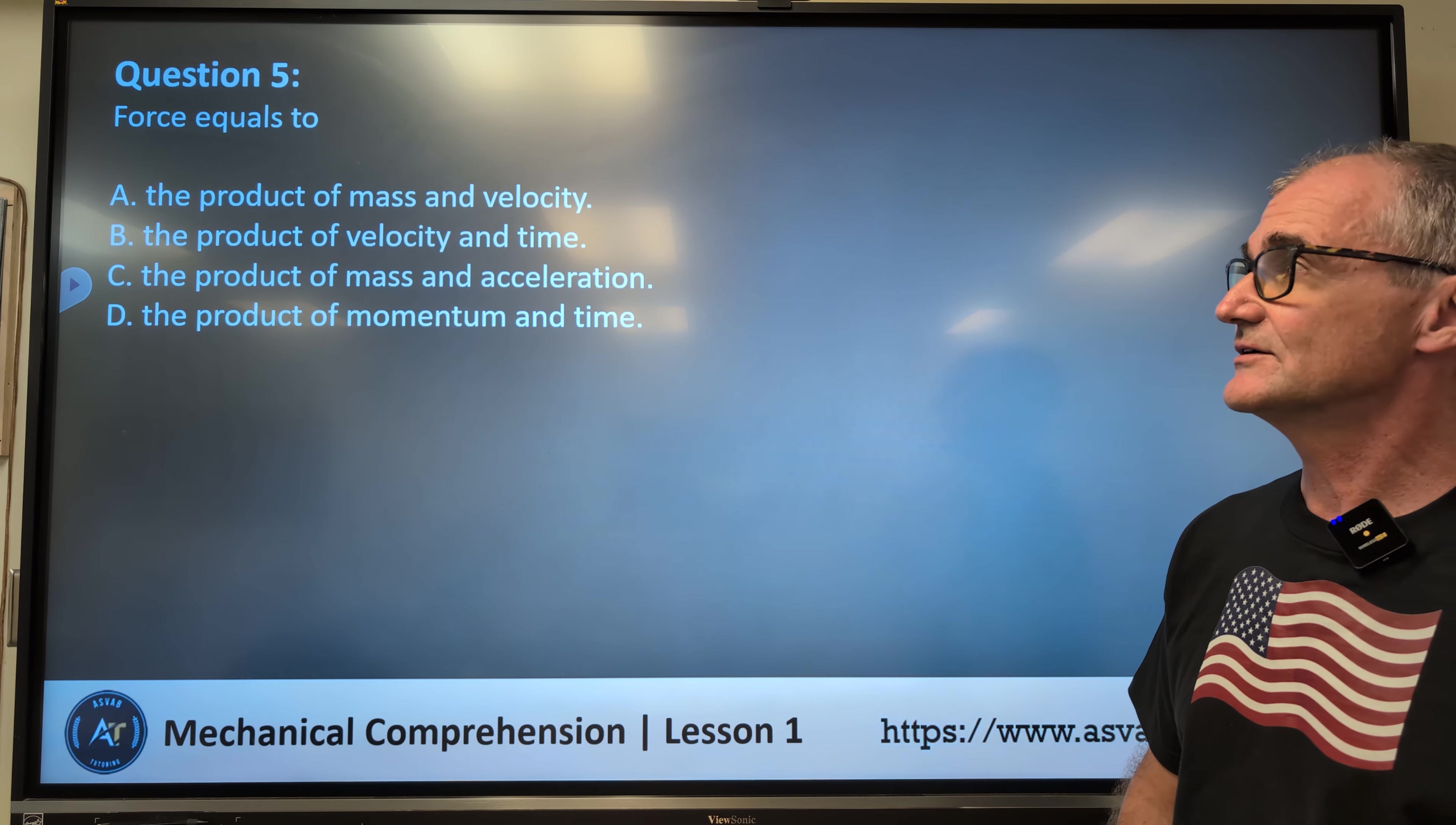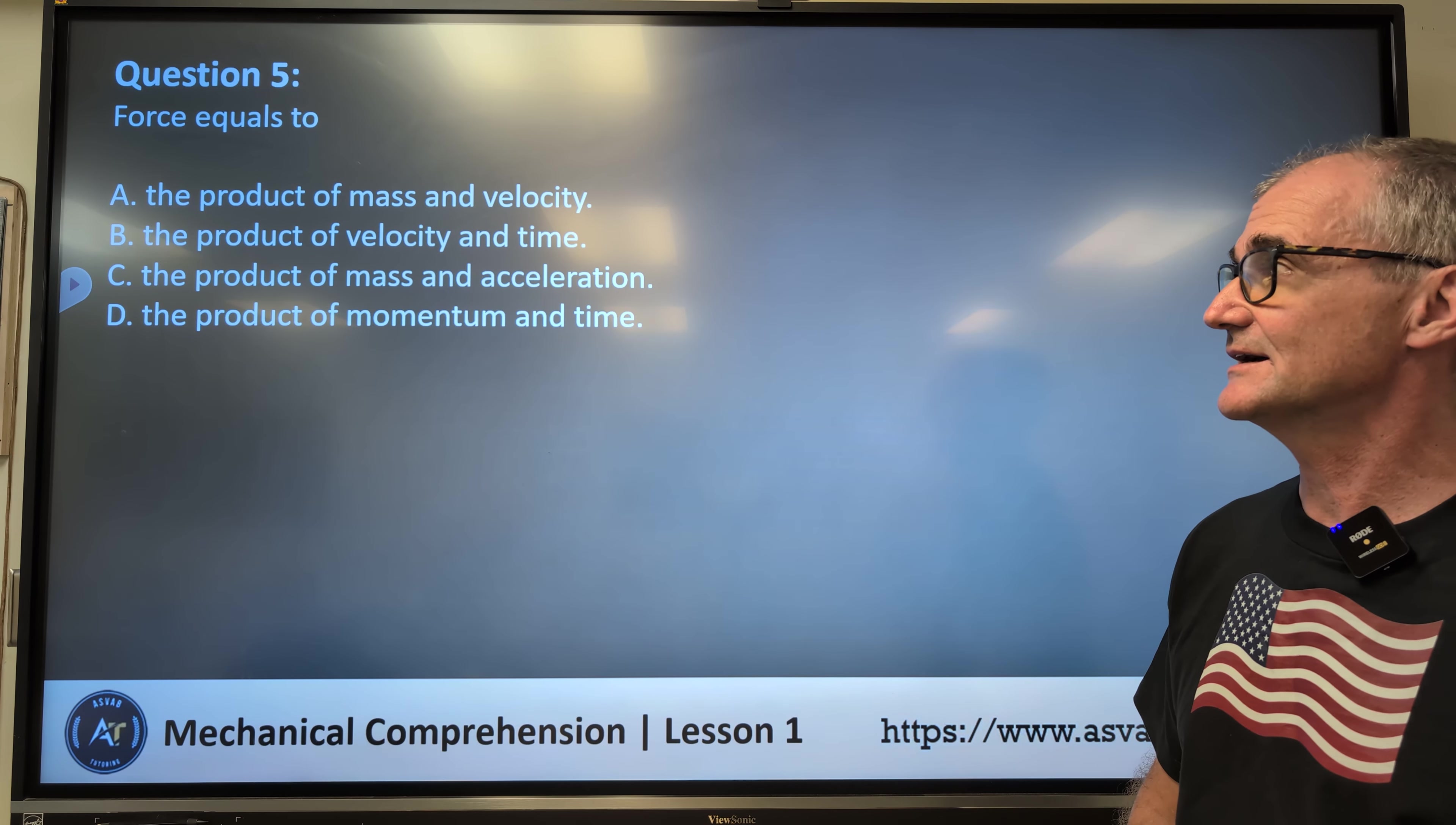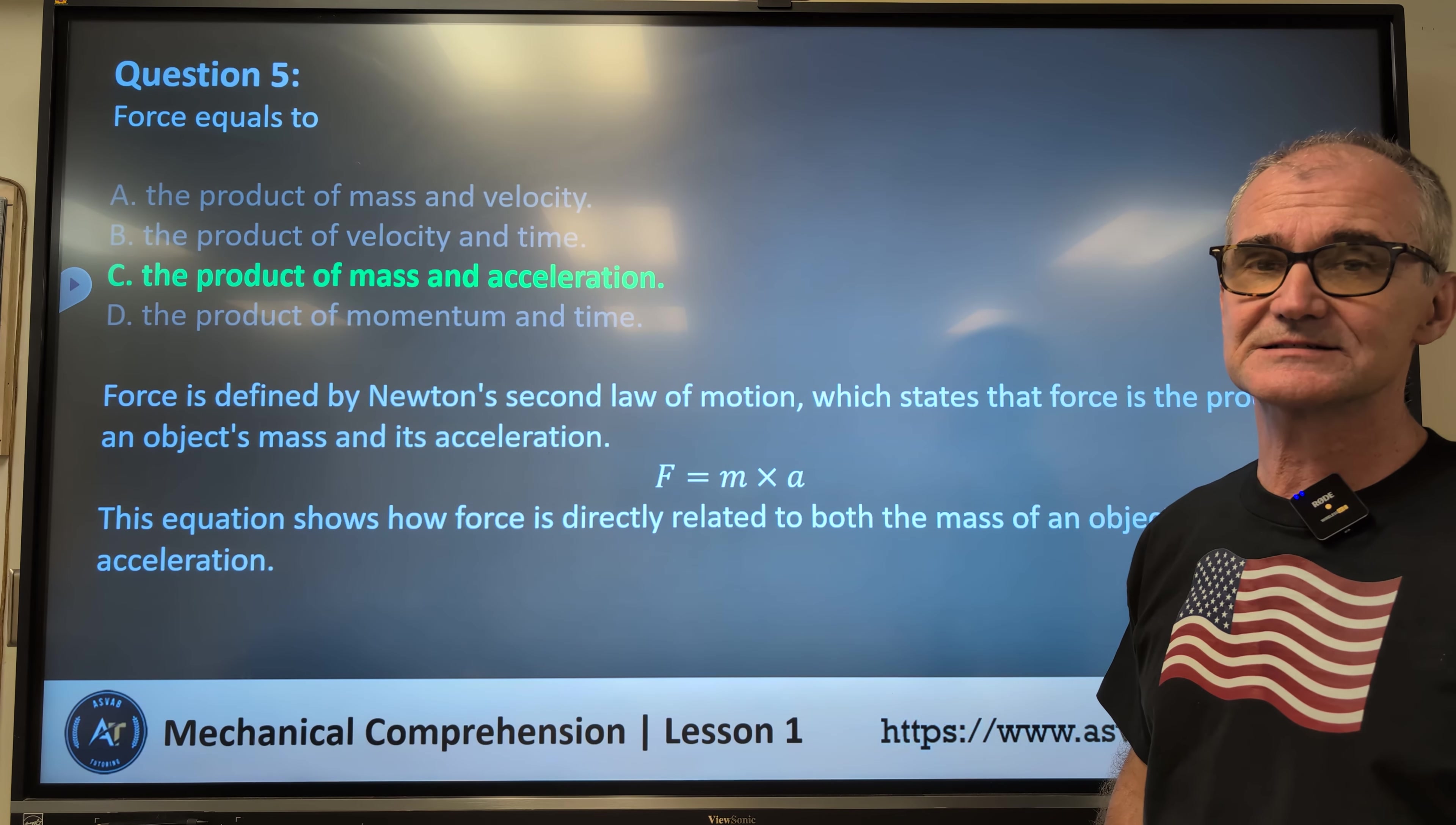Question five. Force equals: A, the product of mass and velocity, B, the product of velocity and time, C, the product of mass and acceleration, or D, the product of momentum and time. Force equals C, the product of mass and acceleration. Force is equal to mass times acceleration. It is Newton's second law of motion, which states force is equal to mass times acceleration.